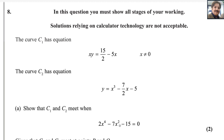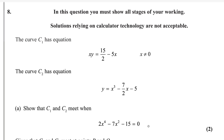In this question, you must show all the stages of your working. Solutions relying on calculator technology are not acceptable. The curve C1 has equation XY equals 15 over 2 minus 5X, where X is not equal to 0. The curve C2 has equation Y equals X cubed minus 7 over 2 times X minus 5. Show that C1 and C2 meet when 2X⁴ minus 7X² minus 15 equals 0. This is just two marks.